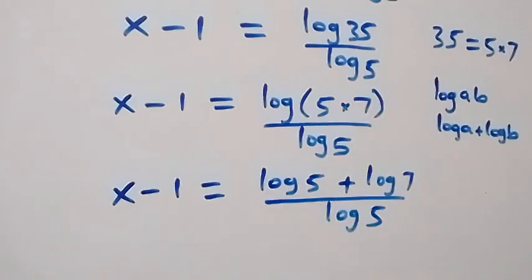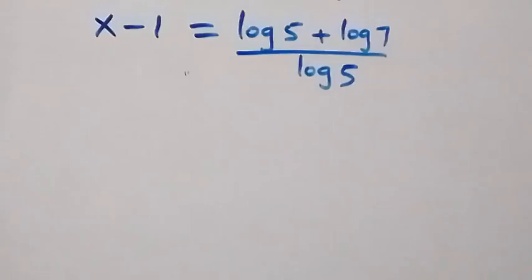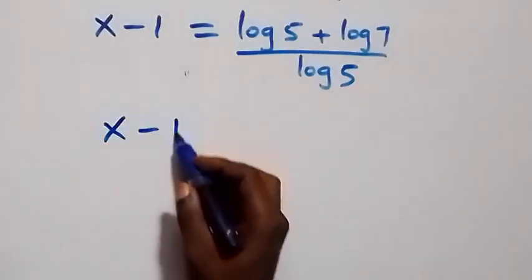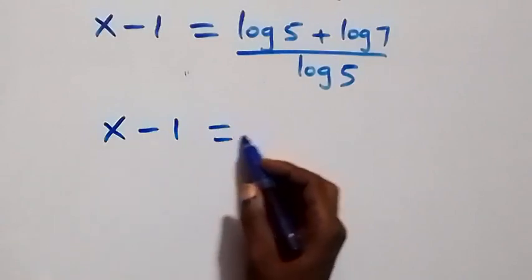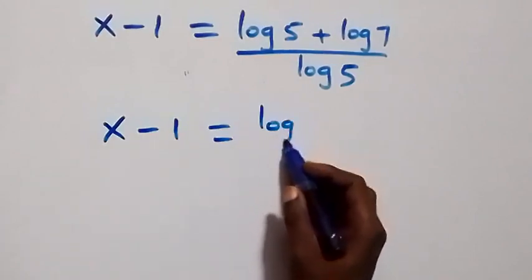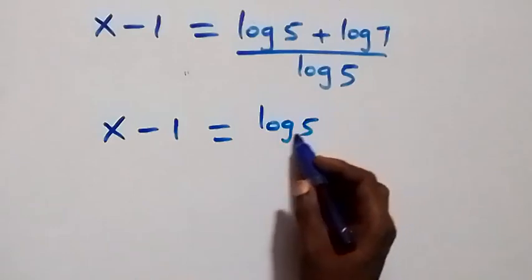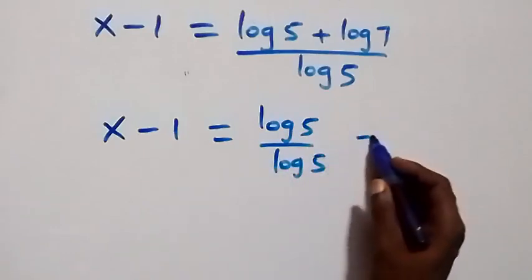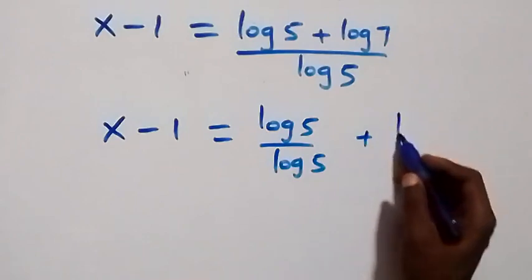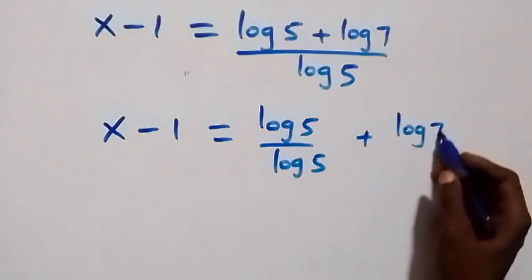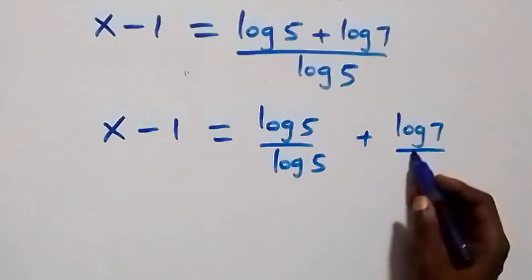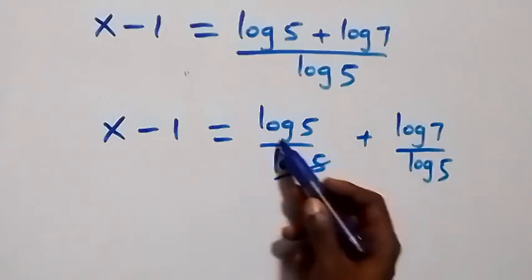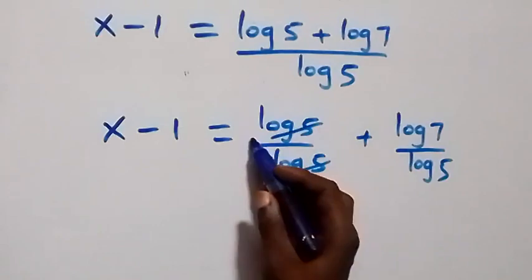We now separate the fraction into two parts: x minus 1 equals log 5 over log 5 plus log 7 over log 5. The log 5 over log 5 cancels to give us 1.